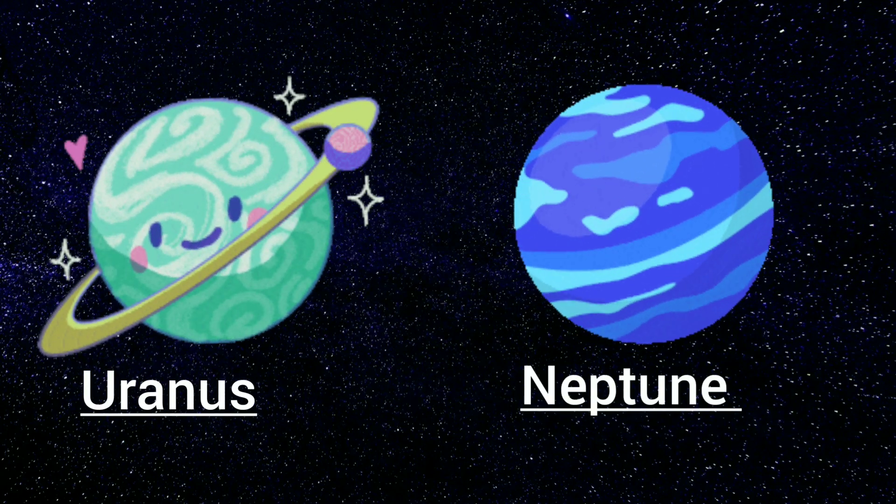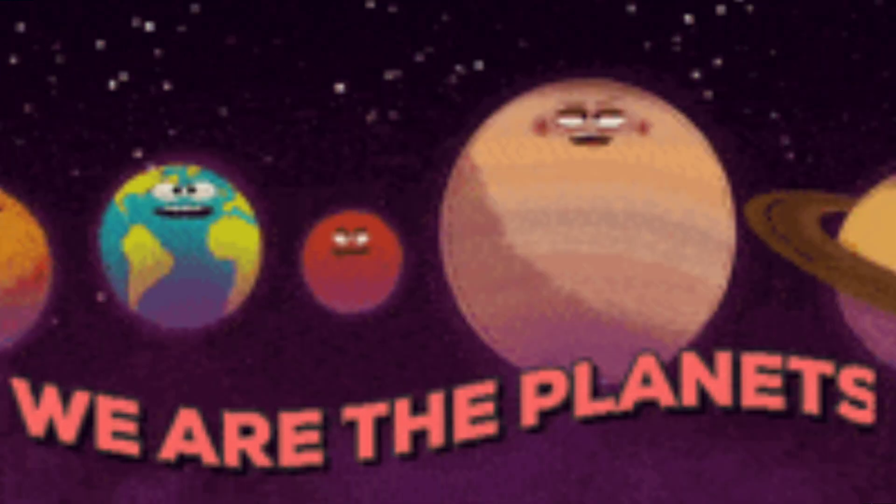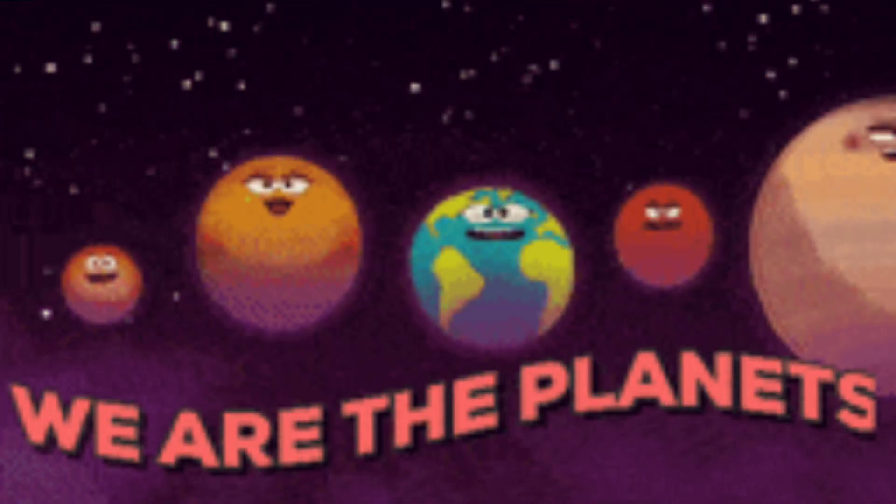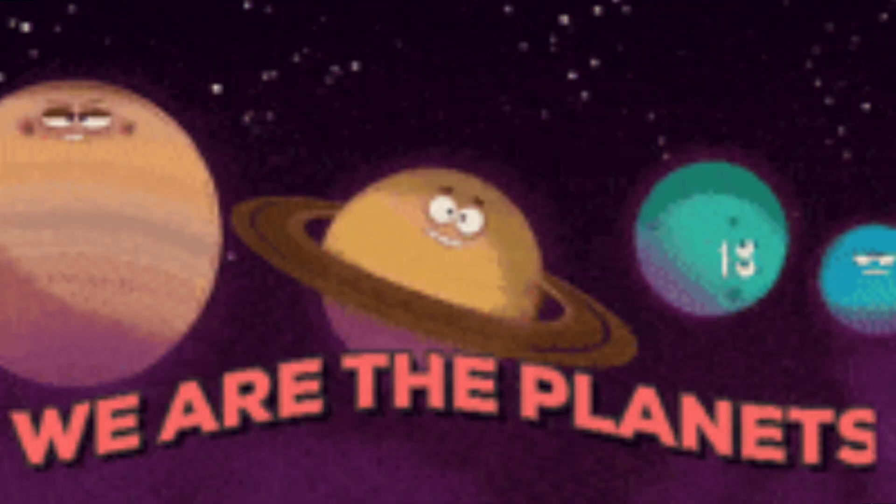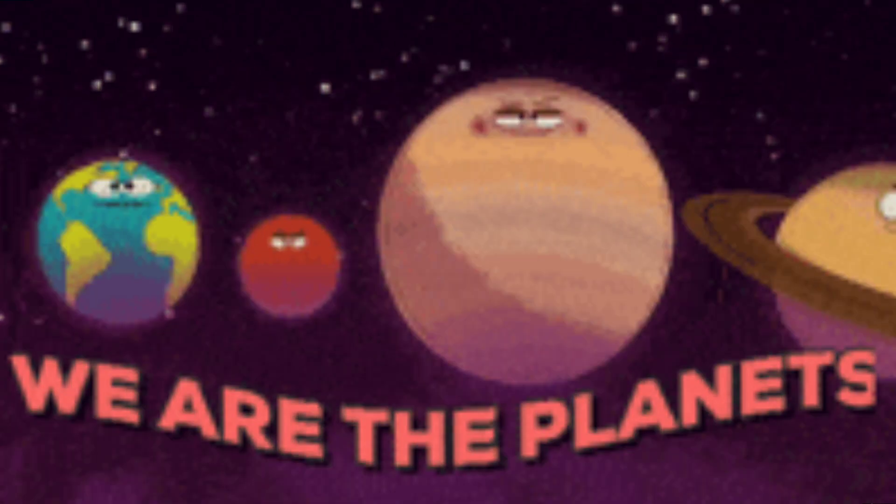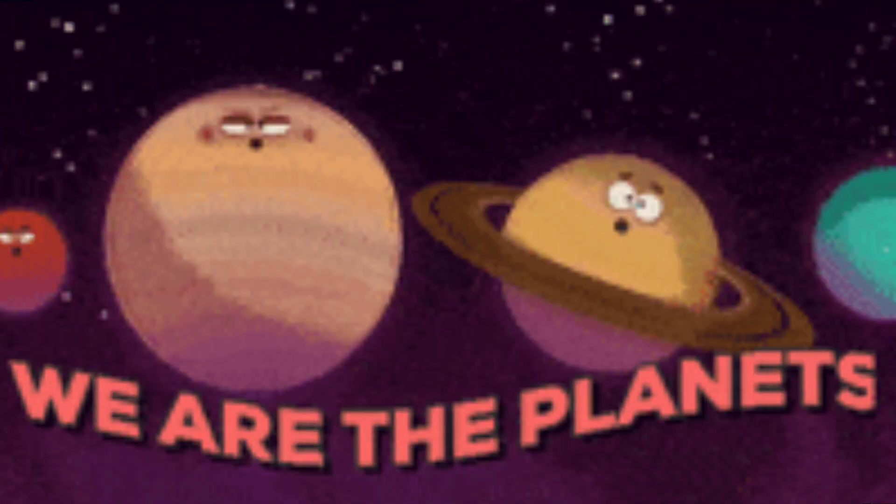Uranus and Neptune all spin round the Sun. These are the planets in the Solar System. These are the planets in the Solar System. They all orbit the Sun. These are the planets in the Solar System. We are singing along.